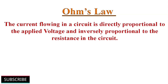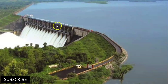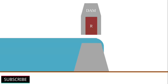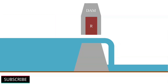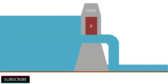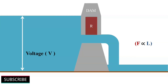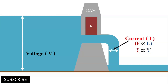Let's try to understand this definition with an example. Imagine a dam across a river and the water flow from its floodgate. If the floodgates are kept open, the flow of water is directly proportional to the water level in the river. If the water level is low, the water flow is also low. The higher the water level, the higher the flow. Consider the water level as voltage and the flow from the floodgate as current. So the flow of current is directly proportional to the applied voltage.